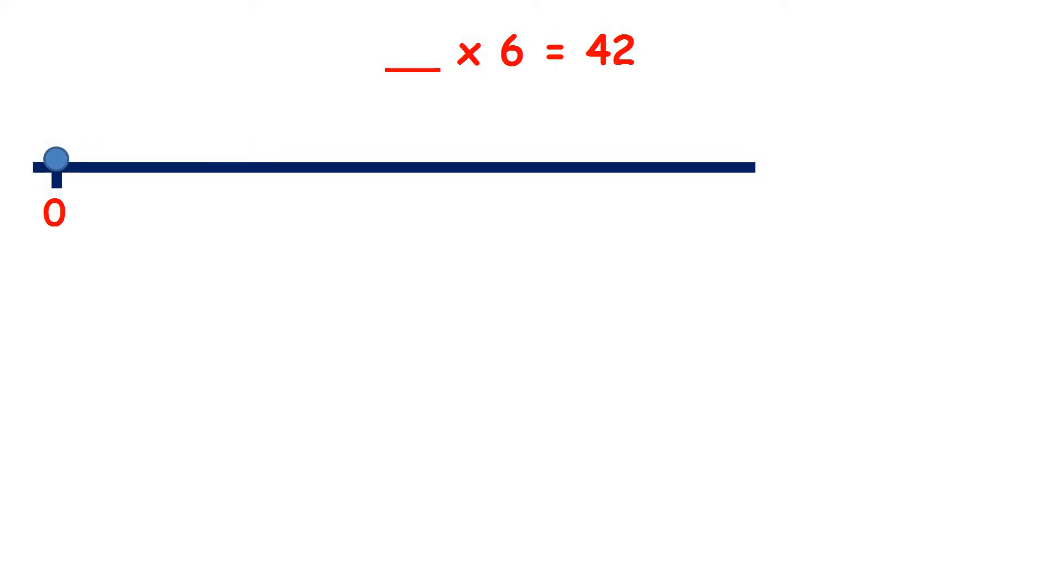Here we have something multiplied by 6 equals 42. So to solve this, we can count up in steps of 6 until we get to 42.